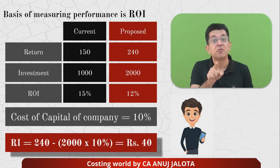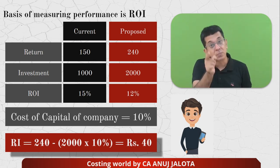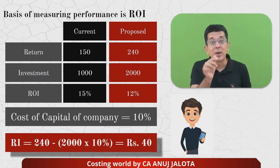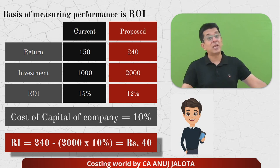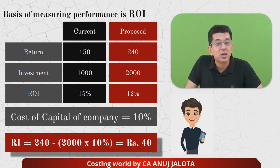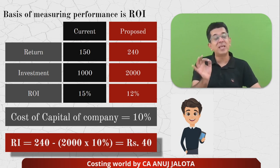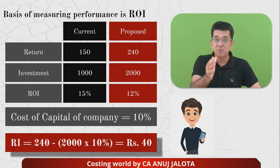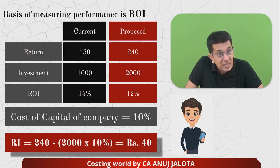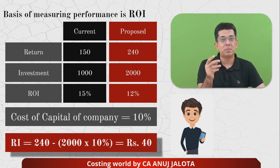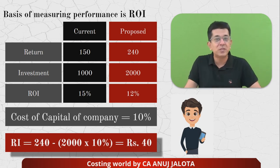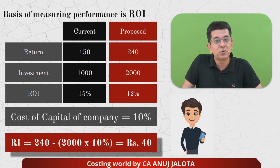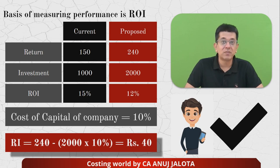So from the company's angle, this project is far better. If Mr. A had been evaluated based on RI instead of ROI, he would have accepted this project — because the residual income is positive (40 rupees). If evaluated on ROI, he would have rejected it. The conclusion: RI is a concept that tells you whether you are left with any money after meeting the cost of funds. If yes, the proposal should be accepted.